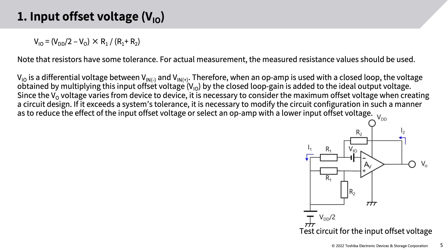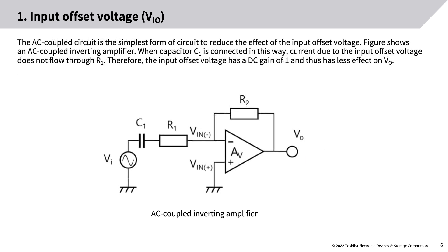Note that resistors have some tolerance; for actual measurement, the measured resistance values should be used. VIO is a differential voltage between VIN− and VIN+. When an op-amp is used with closed-loop, the voltage obtained by multiplying VIO by the closed-loop gain is added to the ideal output voltage. Since VO varies from device to device, it is necessary to consider the maximum offset voltage when creating a circuit design. If it exceeds system tolerance, modify the circuit configuration to reduce the effect of VIO or select an op-amp with lower input offset voltage.